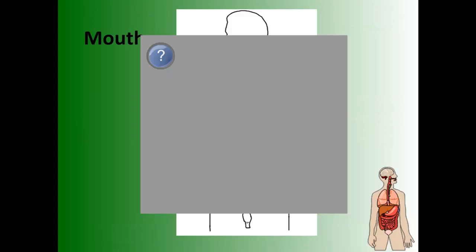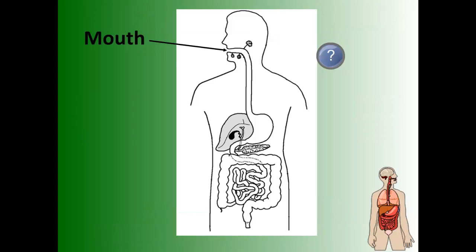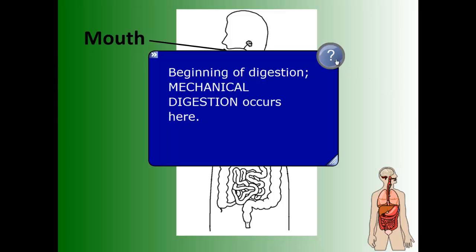The very first part of the system is your mouth. This is the system that intakes food and from that food removes nutrients, removes all the necessary minerals and water, and then expels solid waste. Food enters in the mouth, and this is what we call the beginning of mechanical digestion.